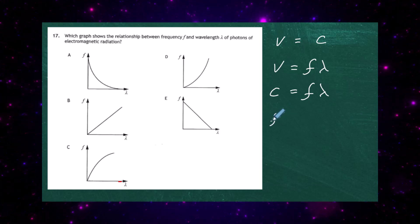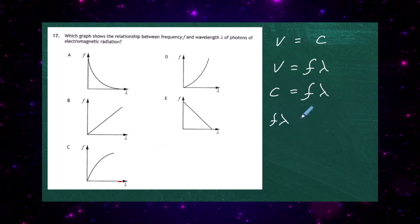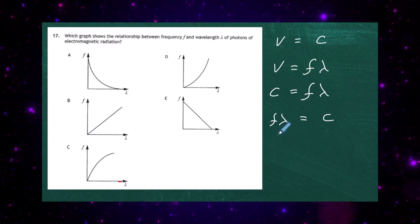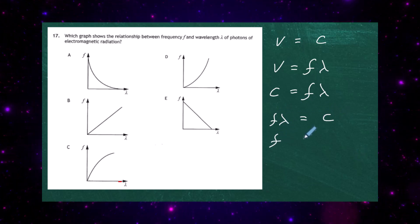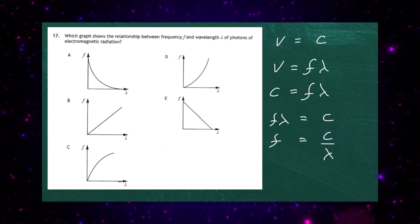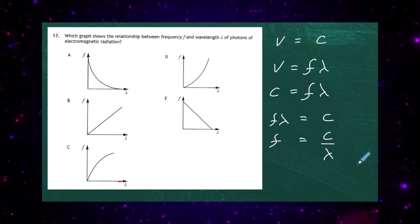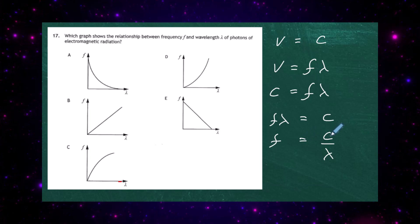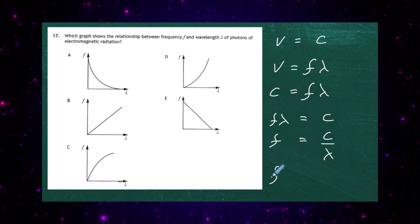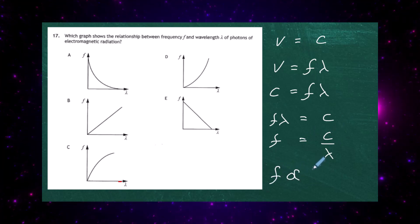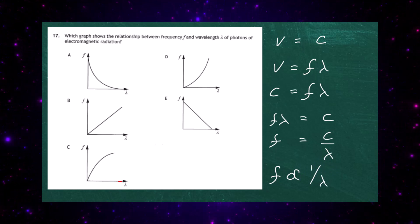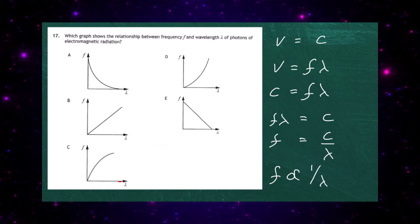Now let's manipulate to get frequency on its own. We rearrange and divide both sides by lambda to get frequency equals c divided by lambda. So the relationship is: frequency is equal to a constant divided by the wavelength, or in other words, frequency is inversely proportional to the wavelength. Now which graph is that going to be?